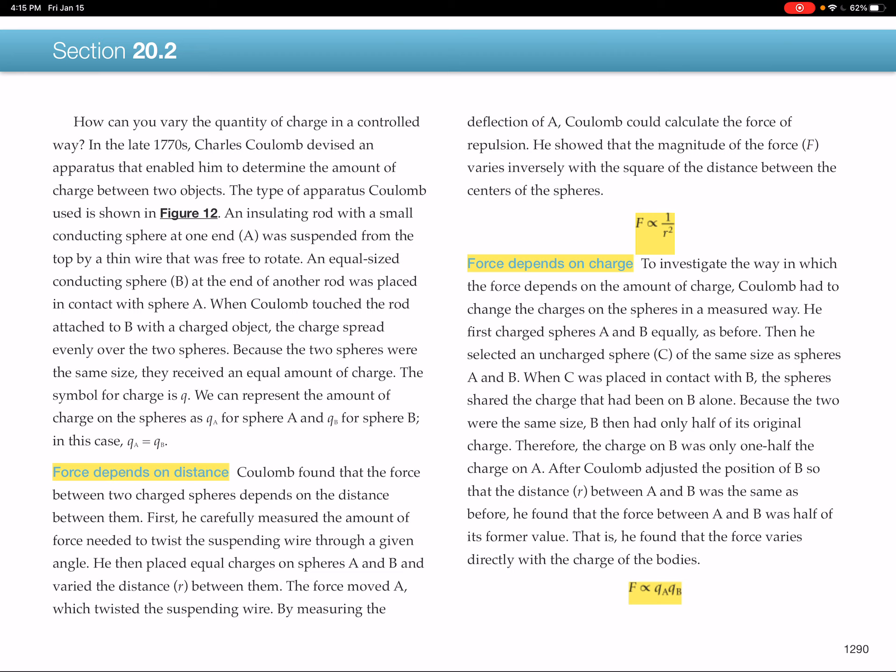So the first thing we want to look at is the dependence of the force on the distance. What Coulomb found is that the force depends on the square of the distance between the charges. It's what we call an inverse-squared relationship. That would mean if you doubled the distance between the charges, the force would go down as one-fourth.